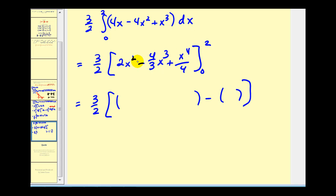When x is 2, we have 8 - 32/3 + 4. When x is 0, we have 0. So we have 3/2 times (12 - 32/3), which gives us 4/3. This simplifies nicely to a final value of 2.